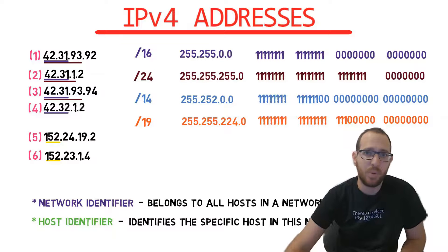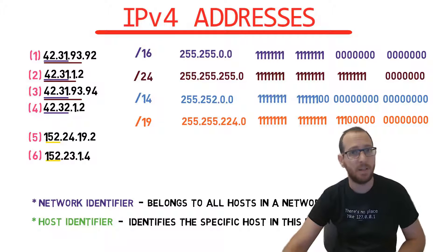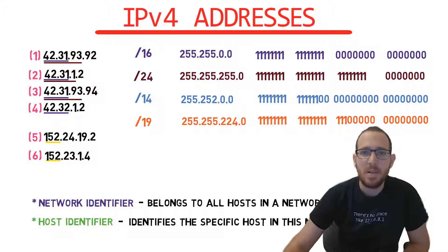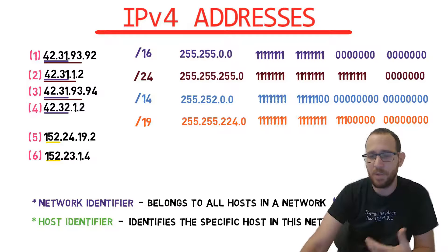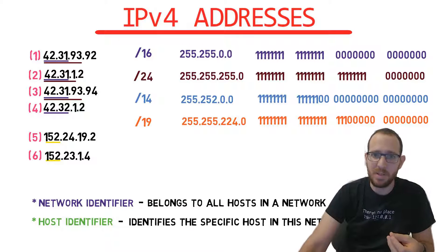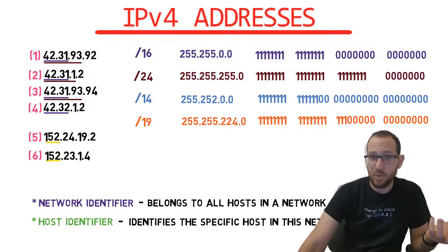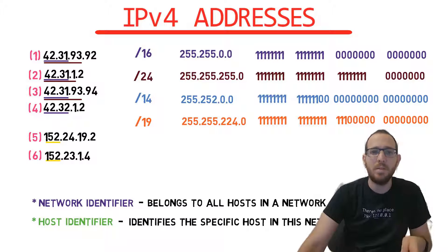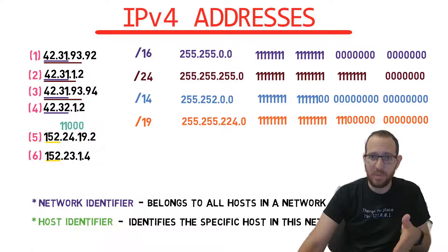They reside in the same network for a prefix of /9. How about /14? I encourage you to stop the video and try solving it yourself. The way I would approach this is to convert the second byte of these addresses to binary. For address 5, this byte is 24 in decimal — that is 16 plus 8 — so we get 00011000 in binary. For address 6, the second byte is 23, or 16 plus 7, so we get 00010111 in binary.